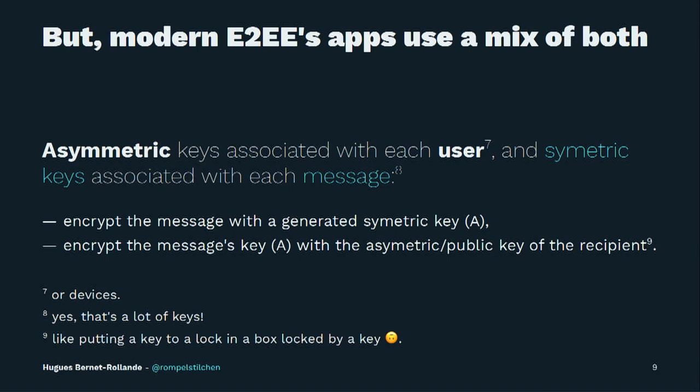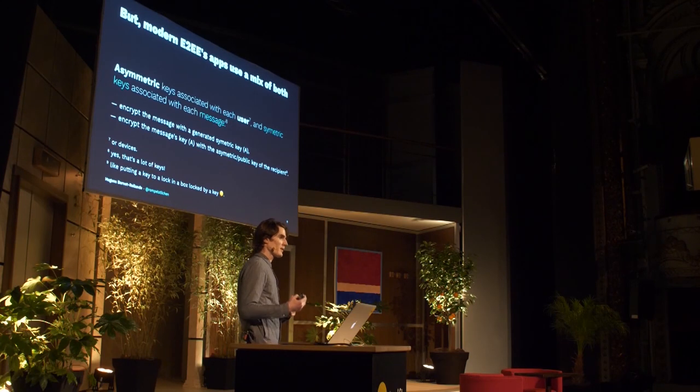In end-to-end encryption, you use a mix of both of those types of keys. You have asymmetrical keys that are associated with each user, and then symmetric keys that are associated with each message. So you encrypt the message with a symmetric key that is generated on the fly, then you encrypt that message key with the asymmetrical public key of the recipient. It's like putting a key to a lock in a box locked with a key.